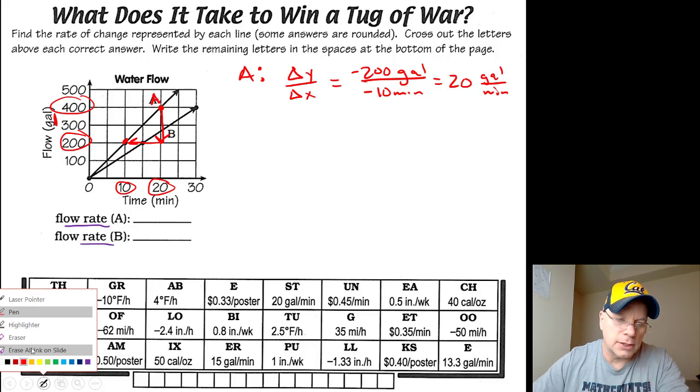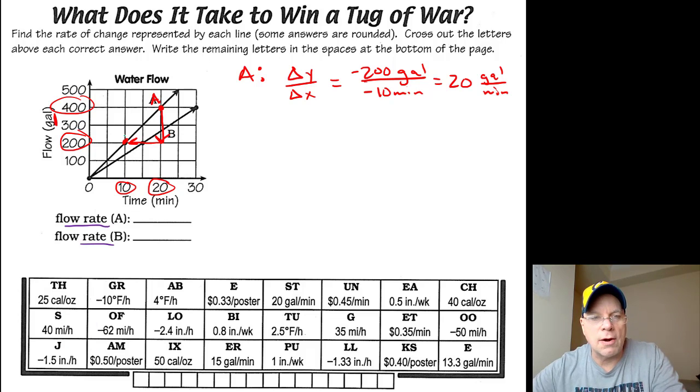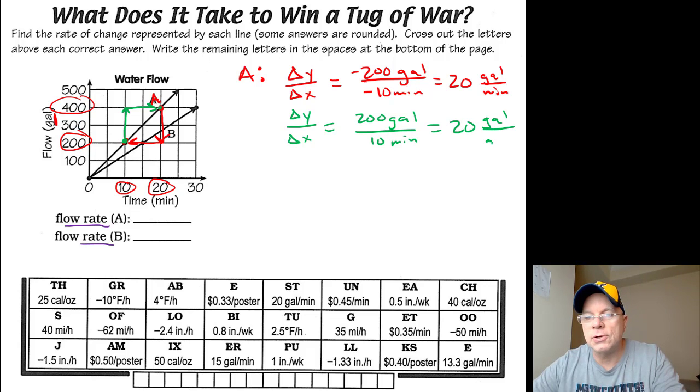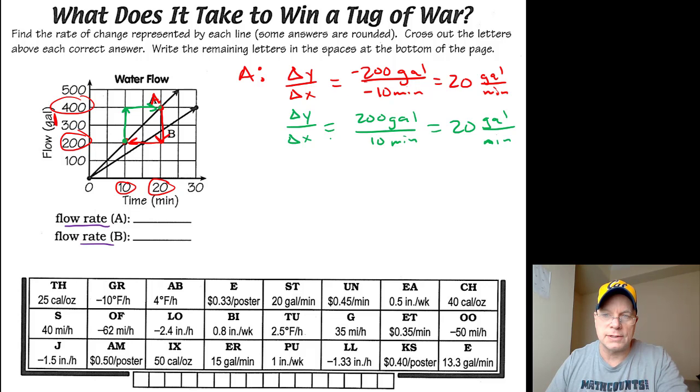Now, I could have made this easier by starting at the lower point and going to the higher point, because then my delta Y over delta X would then be positive 200 gallons over 2 to the right from 10 to 20. So positive 10 minutes. But we know positive divided by positive is positive, and negative divided by negative is positive. So it doesn't matter which point you start at. As long as you're careful with your deltas, as long as you really consider the correct sign for delta Y and the correct sign for delta X, you'll get the same result.